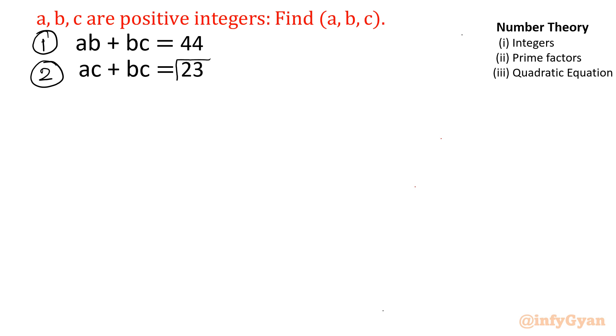I can see 23 is prime number. I will consider equation 2. I will take c common. So (a plus b) times c equal to 23. Now you can see prime factors of 23. We can write 1 into 23 and second factor 23 times 1.